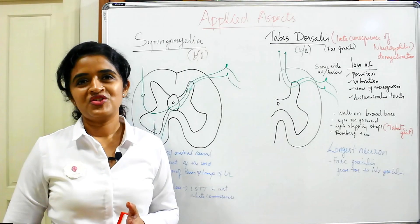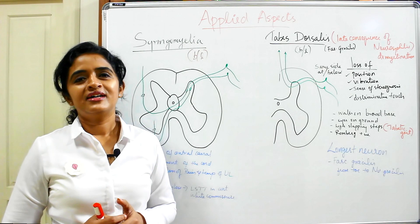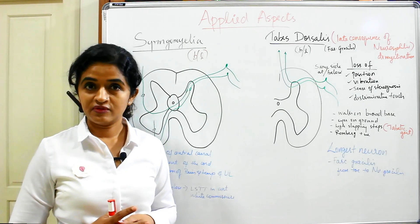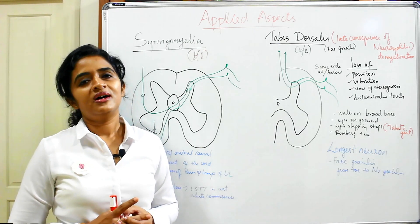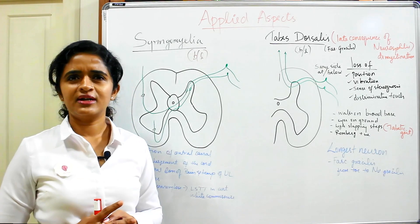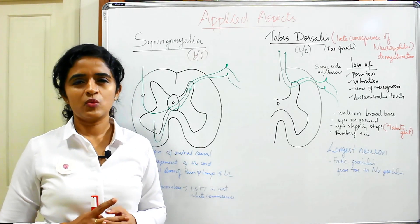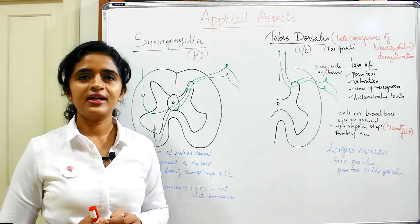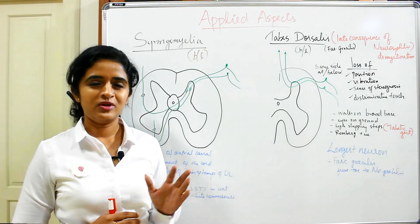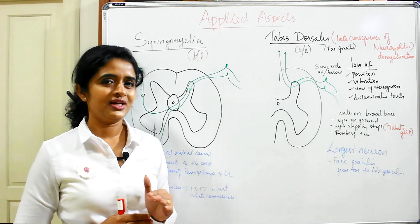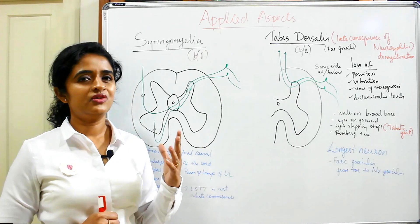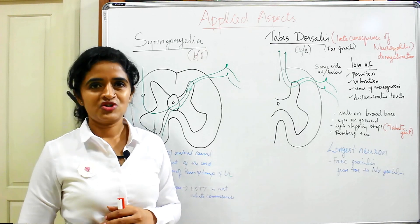Hello everyone, welcome back to my channel. In this session, which is actually a continuation of the spinal cord series, I will be discussing two important applied aspects which are usually asked for viva or theory. They are syringomyelia and tabes dorsalis. I will be talking from an undergraduate perspective so that they can easily remember the facts in a nutshell.